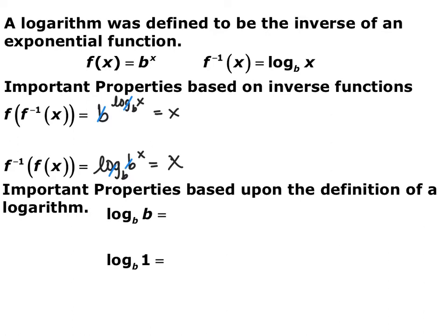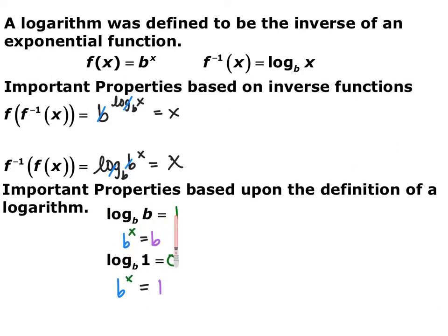Evaluate log base b of b and log base b of 1. Converting log base b of b into exponential form: b to the x equals b, which means the exponent is 1. So log base b of b always equals 1, because b raised to the first power equals itself. For log base b of 1: b to what power equals 1? Anything to the zero power is 1. So log base anything of 1 equals 0.